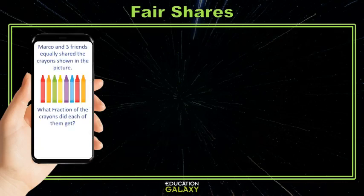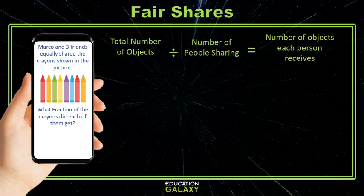Let's try this one. Marco and three friends equally share the crayons shown in the picture. What fraction of the crayons did each of them get? To calculate this, we divide the total number of objects, eight, by the number of people sharing, four. That gives us the number of crayons each person receives, which is two.